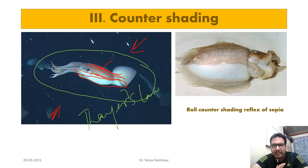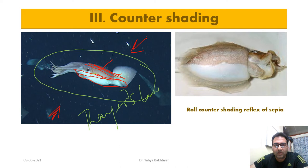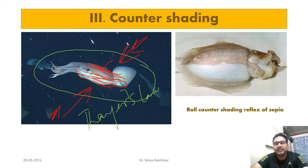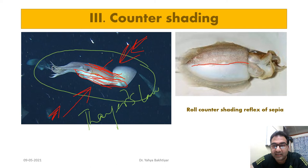Counter shading or Thayer's Law is the method of camouflage in which an animal's coloration is darker on the upper side and lighter on the underside. Squids that spend much of their time in mid-water rather than near the bottom can be seen easily by predators from below. Counter shading helps the cephalopod blend in when there is no substrate to match. This is also called the roll counter shading reflex of Sepia.